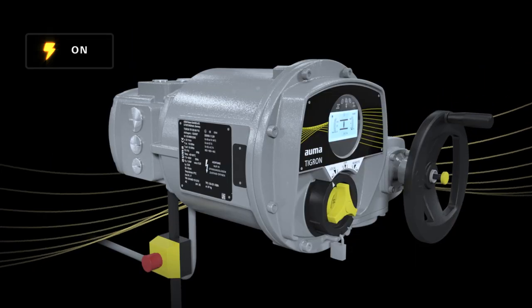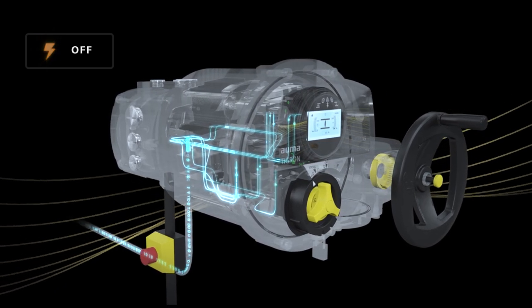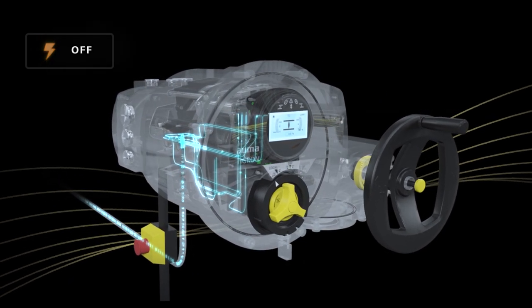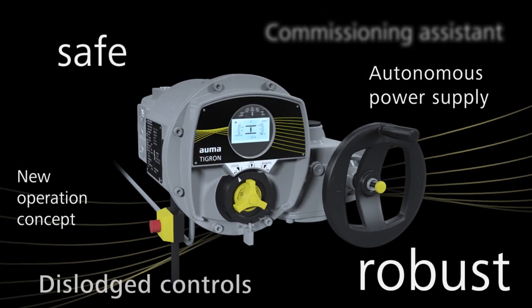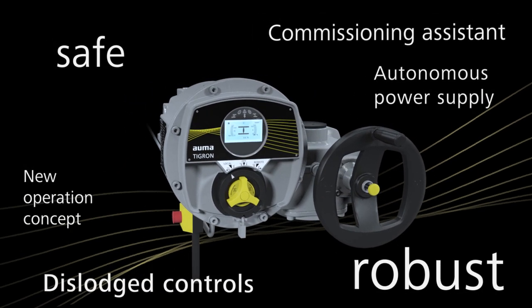An internal current buffer supplies the Tigron sensor and electronics system in case of power failure. Most sophisticated technology combined with proven quality.